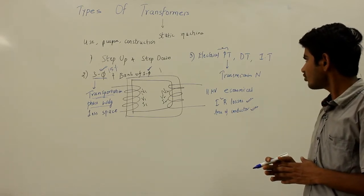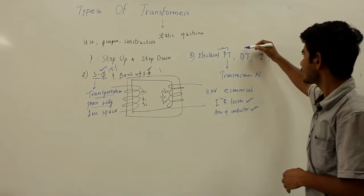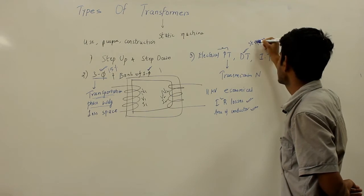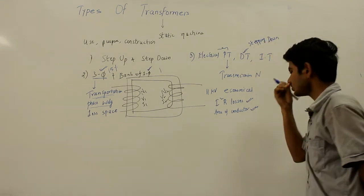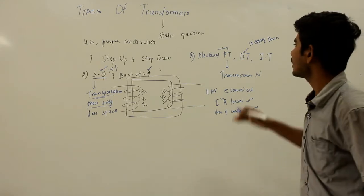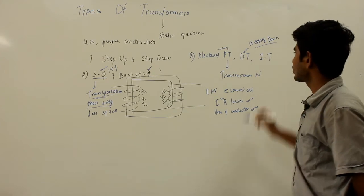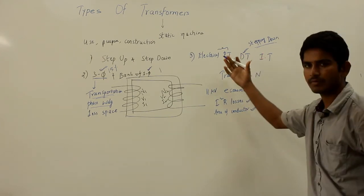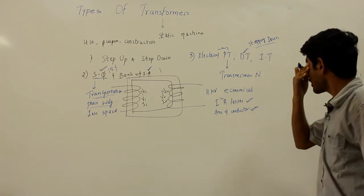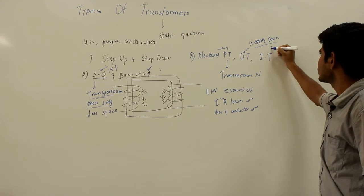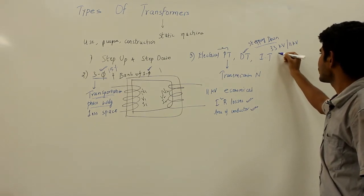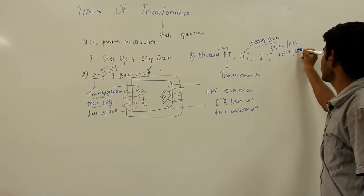Distribution transformers are used for stepping down the voltage level for domestic and commercial purposes. Transmission lines carry high voltages around 400 kV. There are two types of transmission — primary and secondary — and two types of distribution — primary and secondary. Primary distribution is around 33 kV, secondary distribution is around 11 kV for industries, and around 230 V or 600 V for domestic purposes.